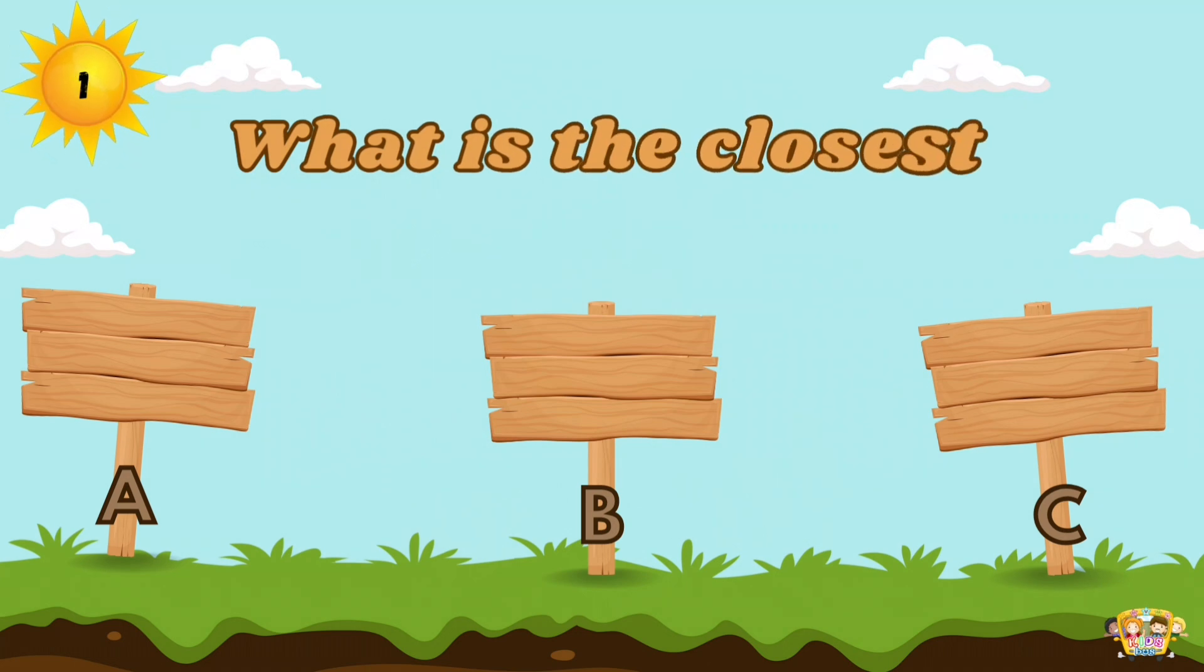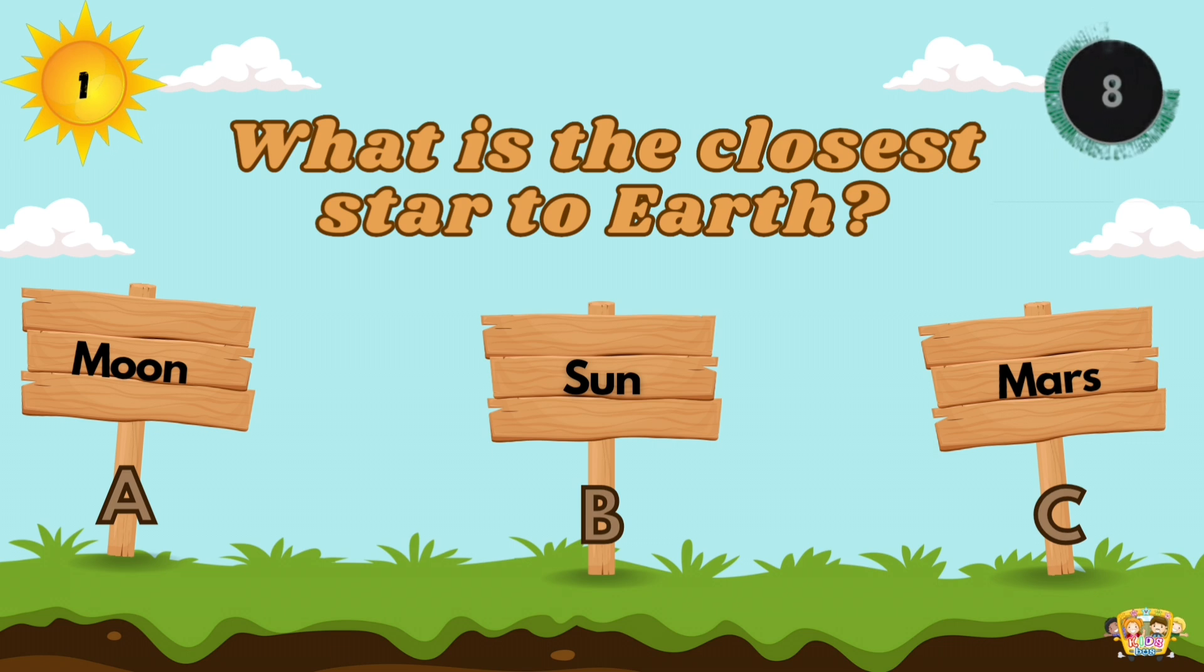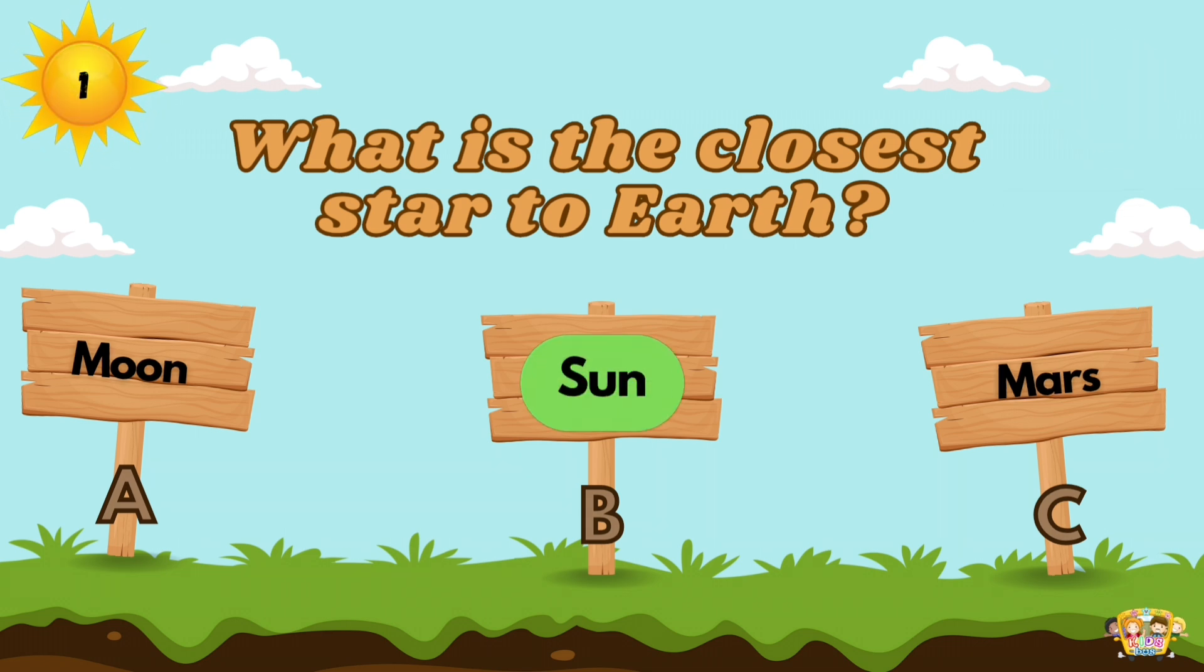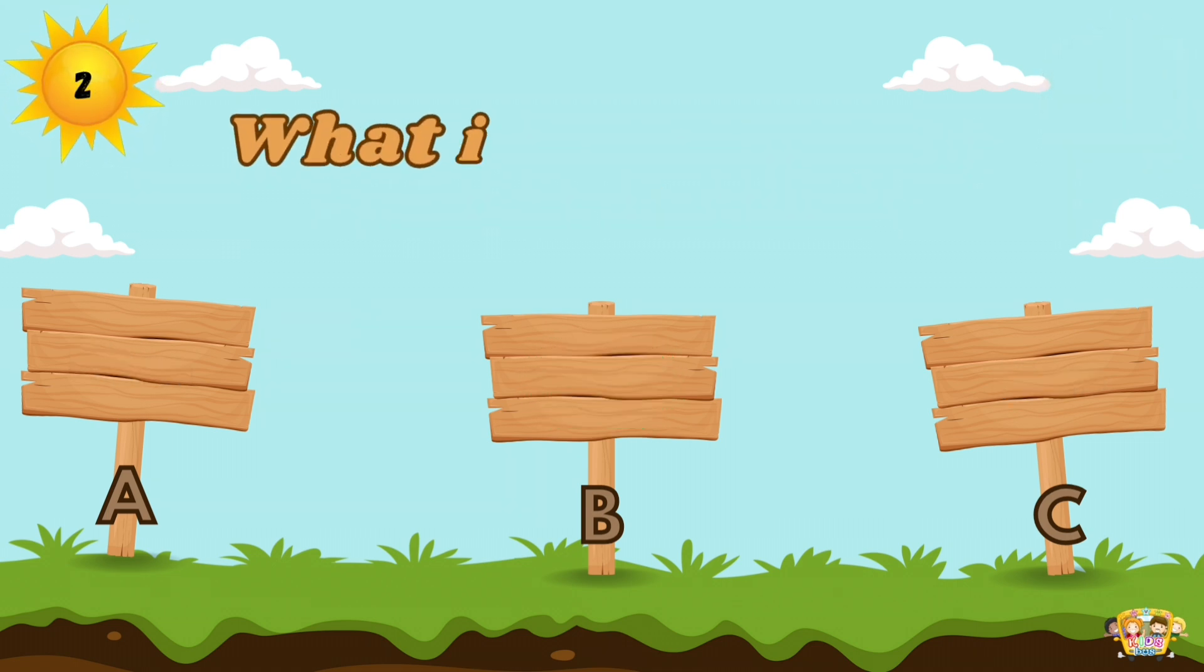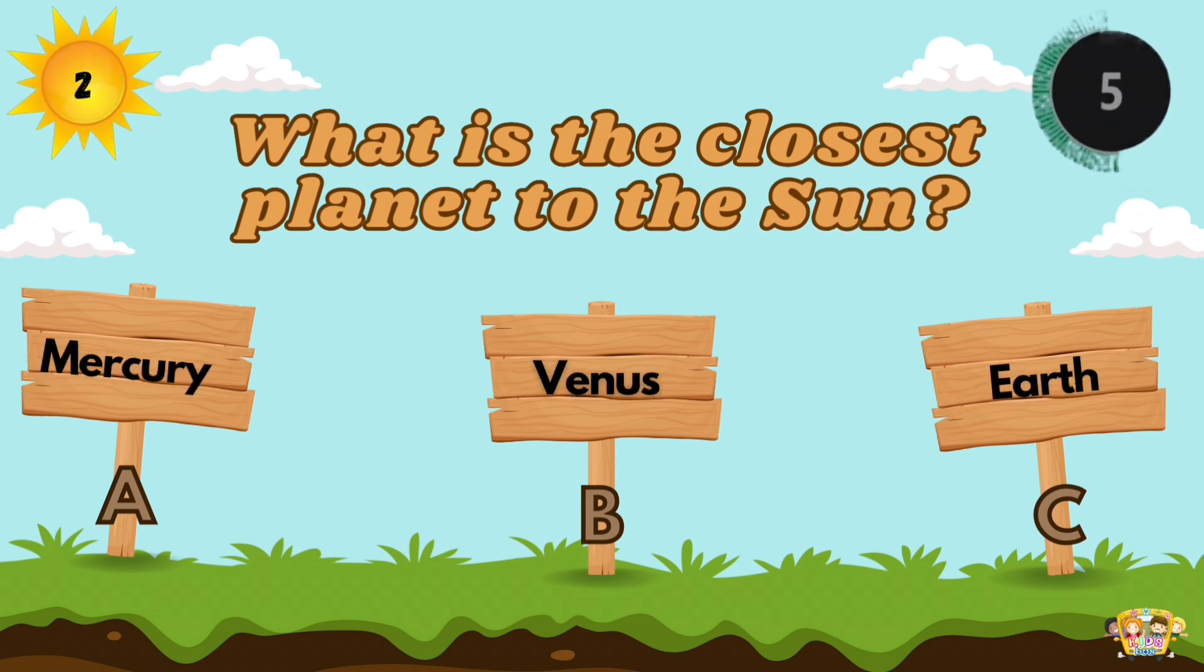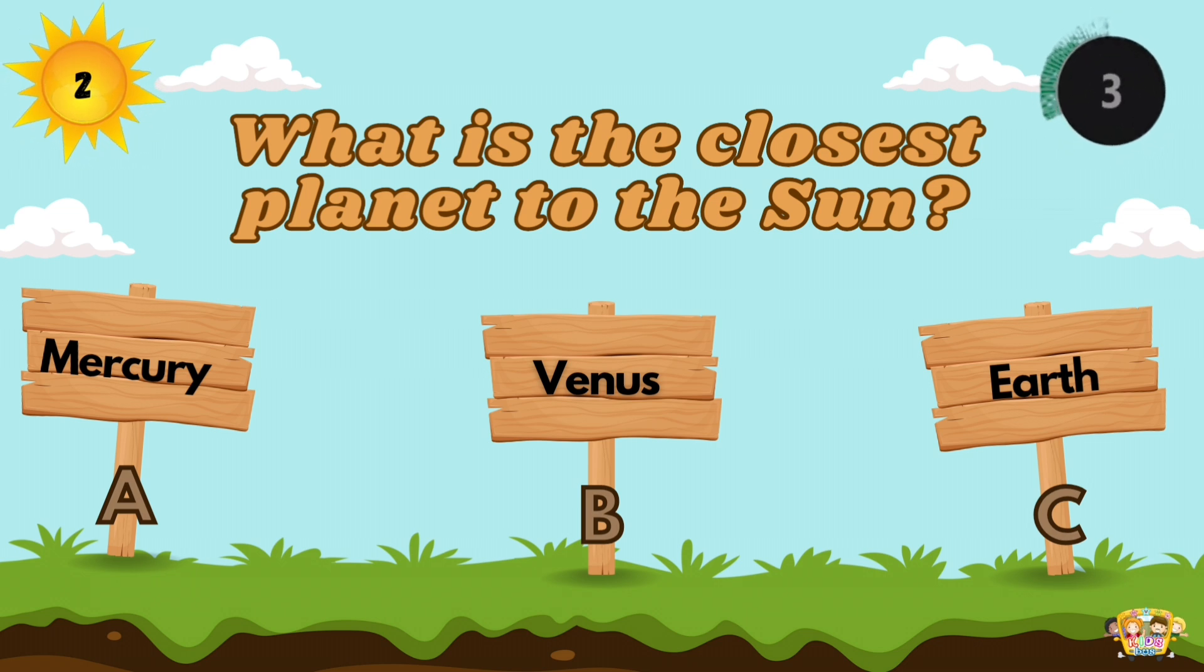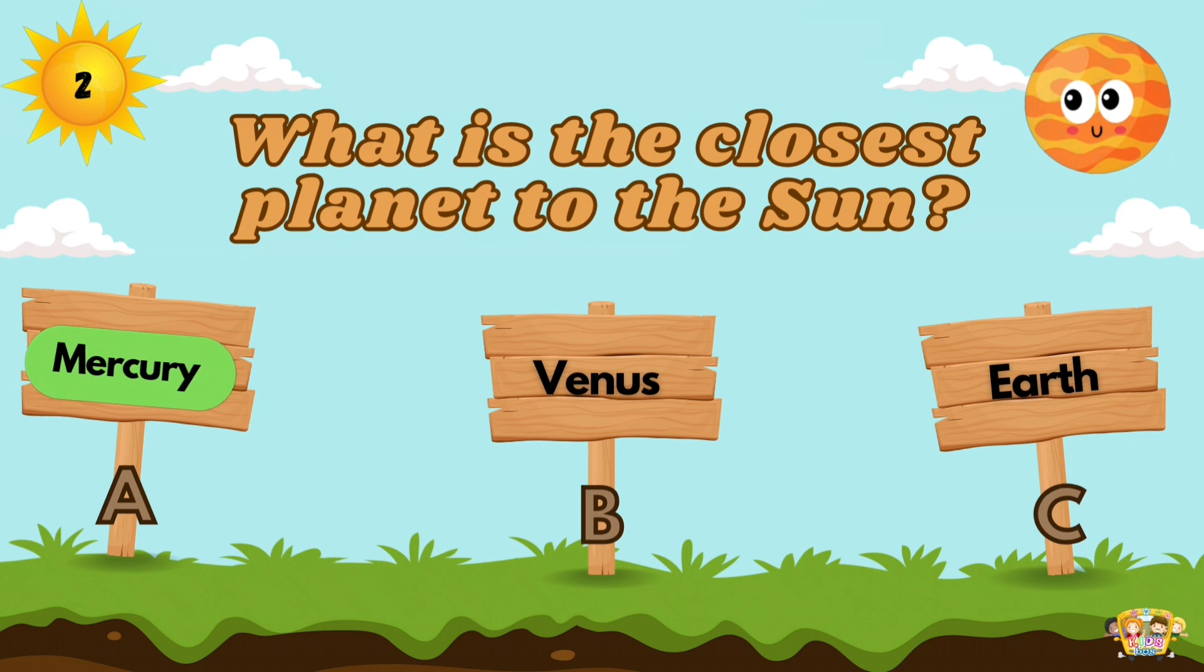What is the closest star to Earth? The Sun is the closest star to the Earth. What is the closest planet to the Sun? It's Mercury.